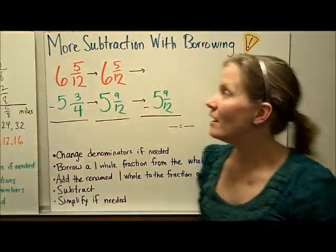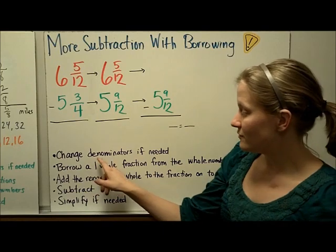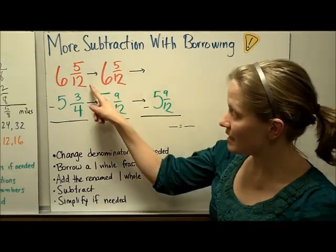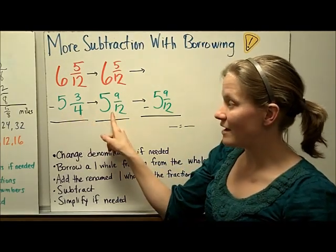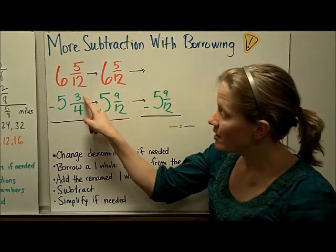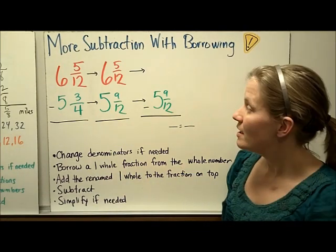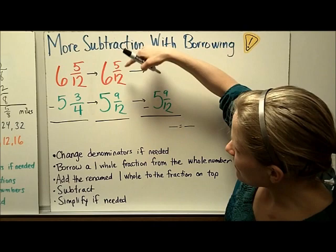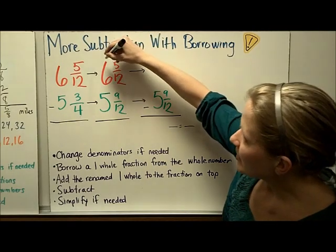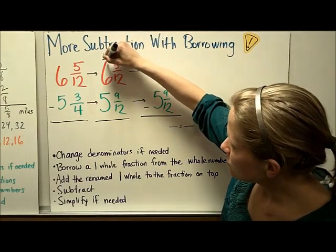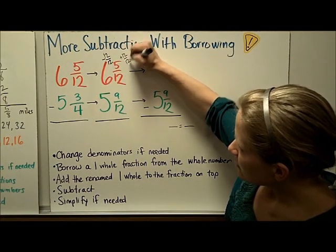Let's do one more example of when we have to use borrowing and subtraction and talk about the steps as we do it. First of all, change the denominators if you need to. In this case, my denominators did not match yet. They were 12 and 4. So I changed 5 and 3/4 into 5 and 9/12. Multiply by 3 on the denominator. Multiply by 3 on the numerator. Next, I'm going to borrow a 1 whole fraction from the whole number. So I'm going to take away... I'm going to see here that I have 9/12 and I can't take away 9/12. So that tells me I need to borrow. I'm going to take away 12/12 from my whole number and add that 12/12 to my fraction.